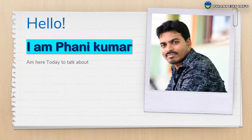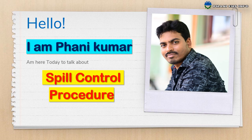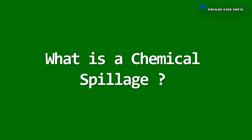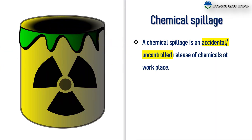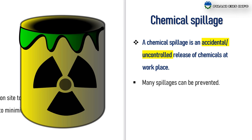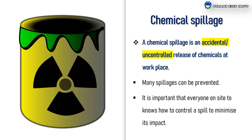Hello friends, I am Pandi Kumar. I am here today to talk about Spill Control Procedure. A chemical spillage is an accidental or uncontrolled release of chemicals at the workplace. Many spillages can be prevented. It is important that everyone on site knows how to control a spill to minimize its impact.